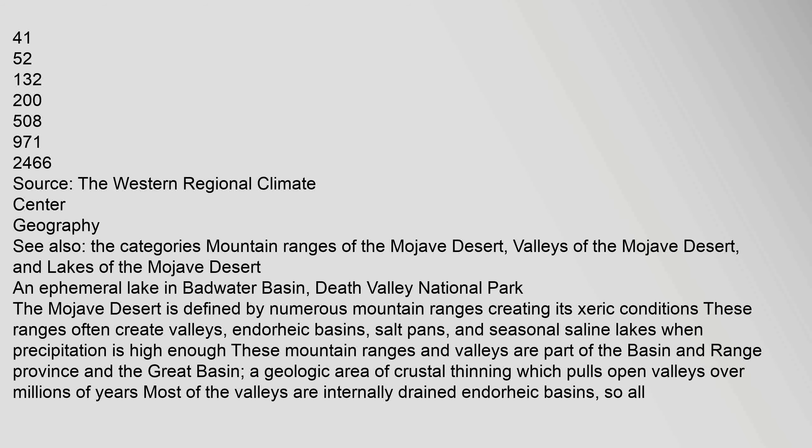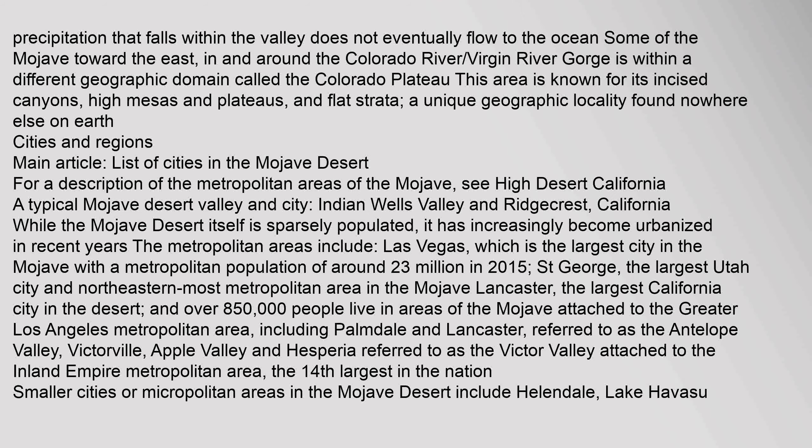When precipitation is high enough, these mountain ranges and valleys are part of the basin and range province and the Great Basin — a geologic area of crustal thinning which pulls open valleys over millions of years. Most of the valleys are internally drained endorheic basins, so all precipitation that falls within the valley does not eventually flow to the ocean. Some of the Mojave toward the east, in and around the Colorado River and Virgin River Gorge, is within a different geographic domain called the Colorado Plateau.